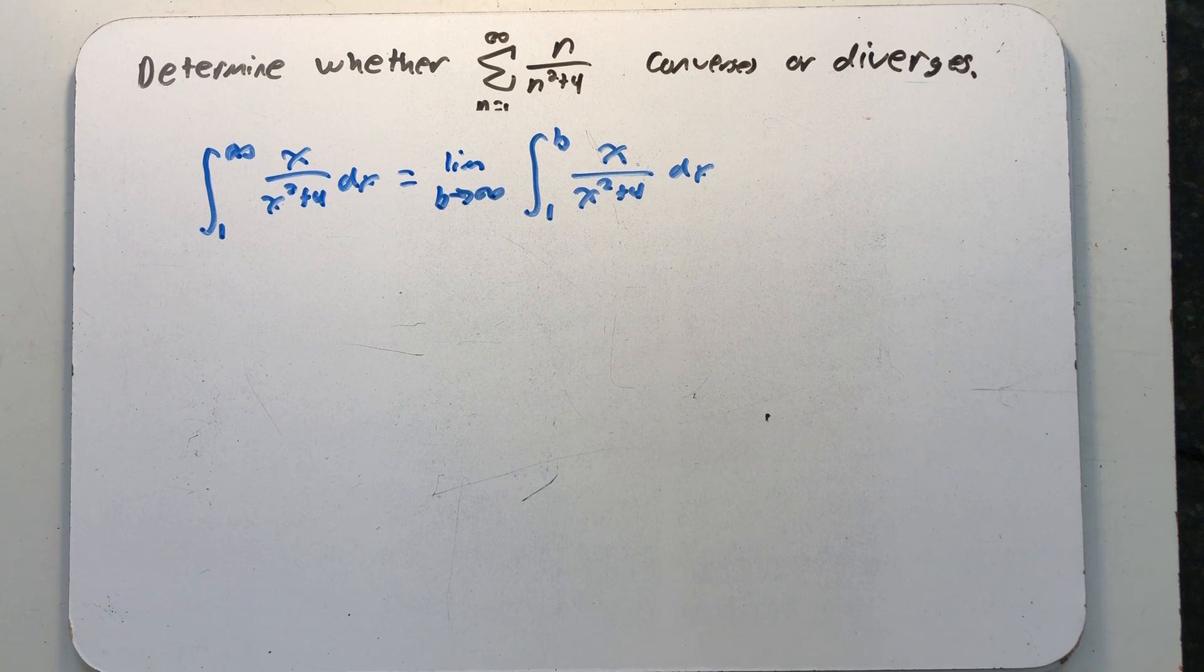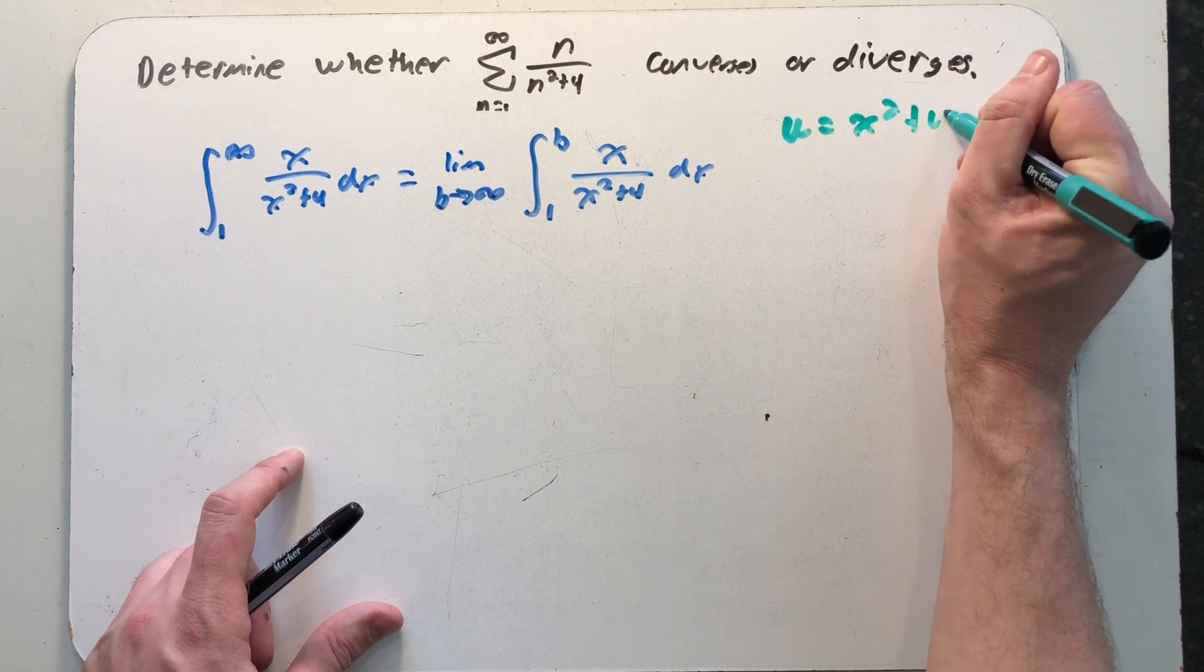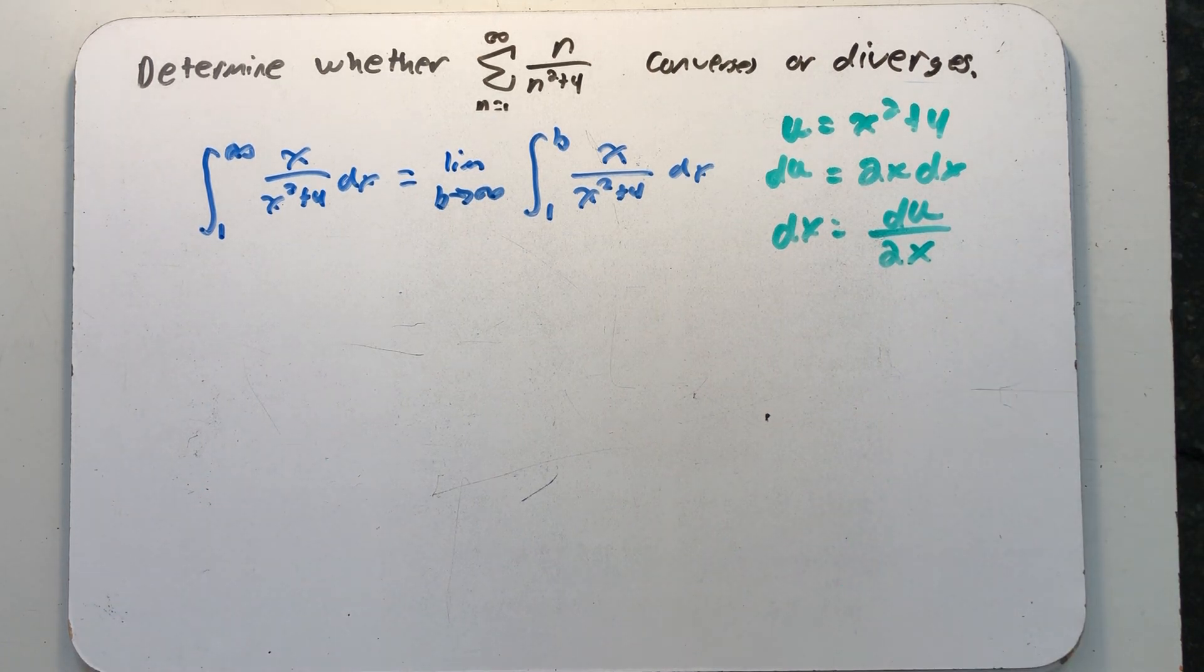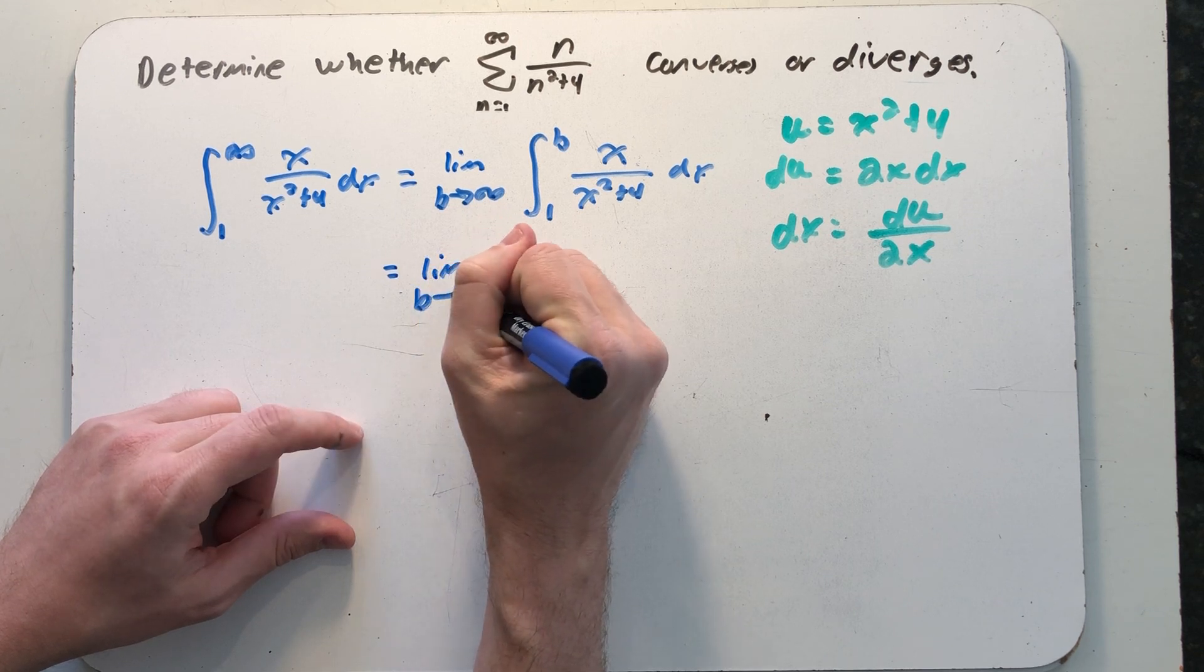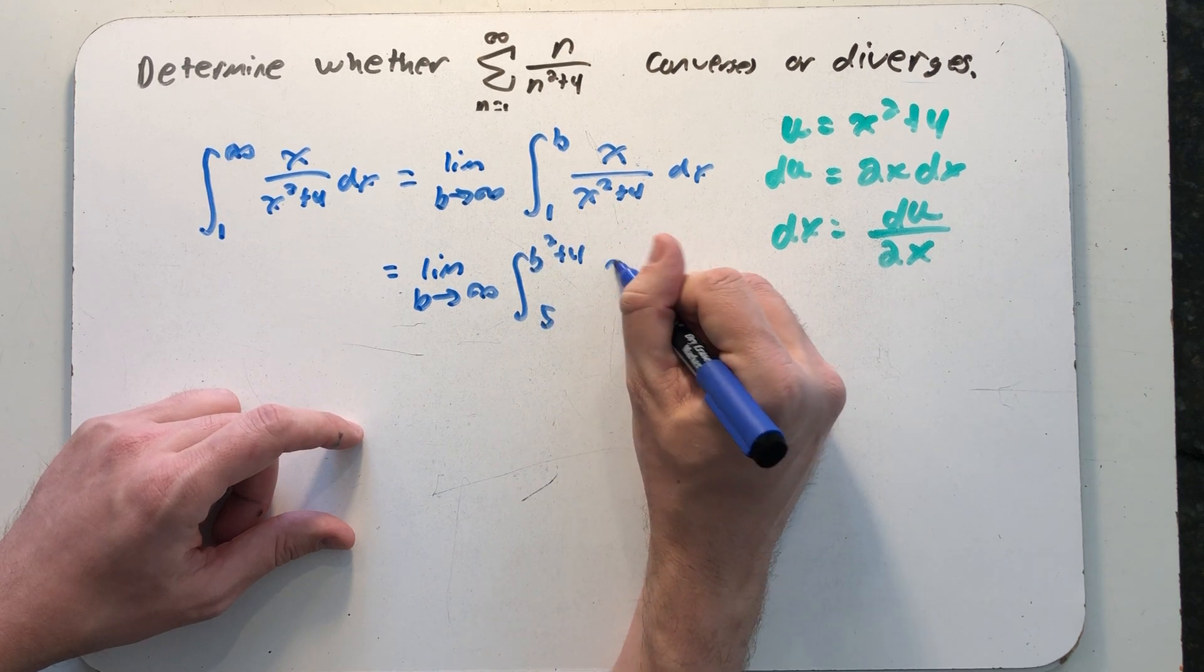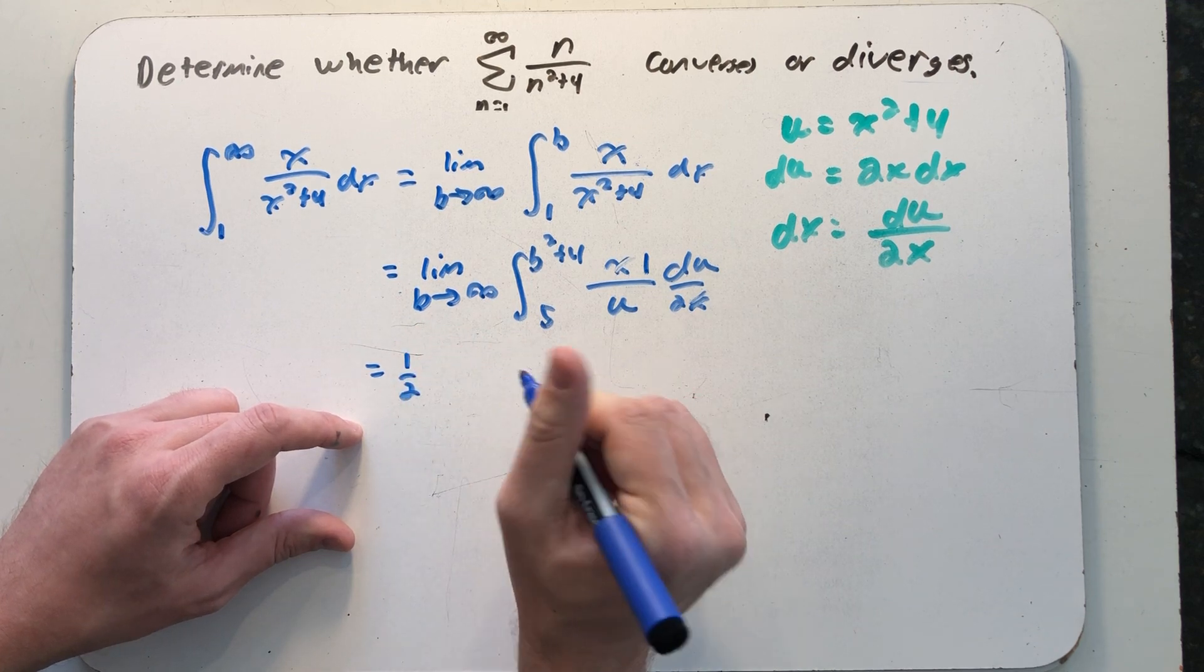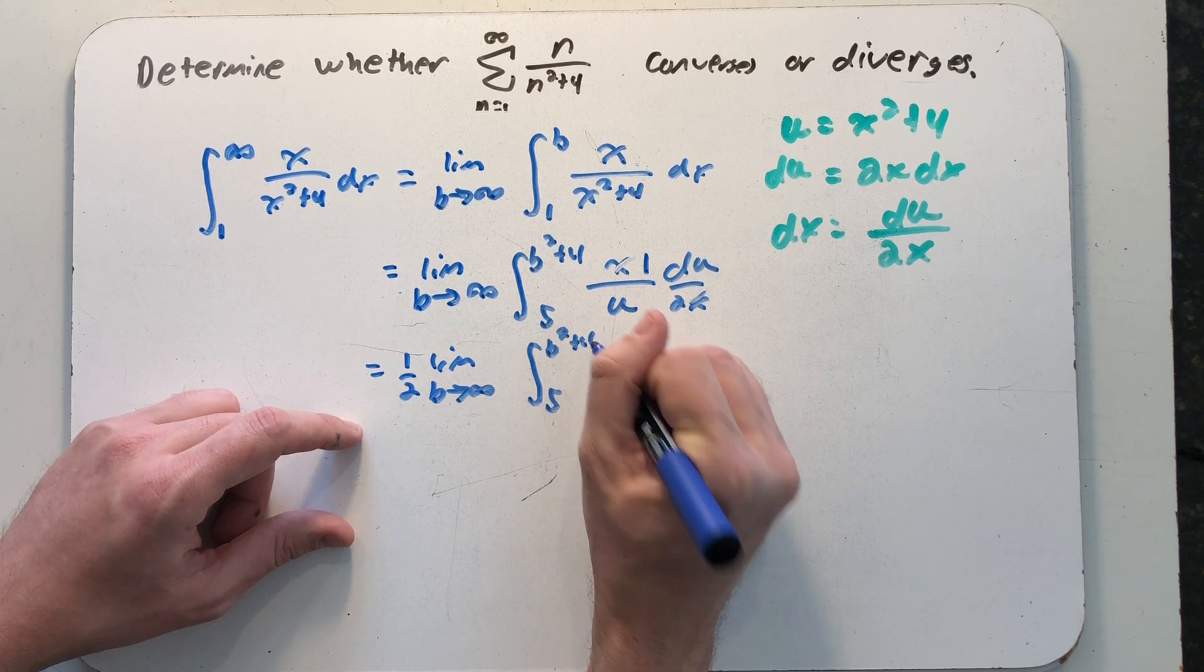Now looking at the definite integral I have to deal with, I think I can make a substitution. So we'll make our substitution and we're well on our way. And what I see here are the x's surely cancel. I'm gonna go and pull a one-half out front of the integral and the limit, just leaving me with this definite integral to deal with.